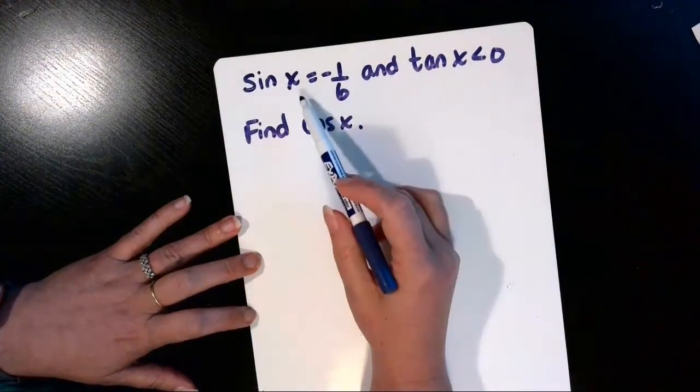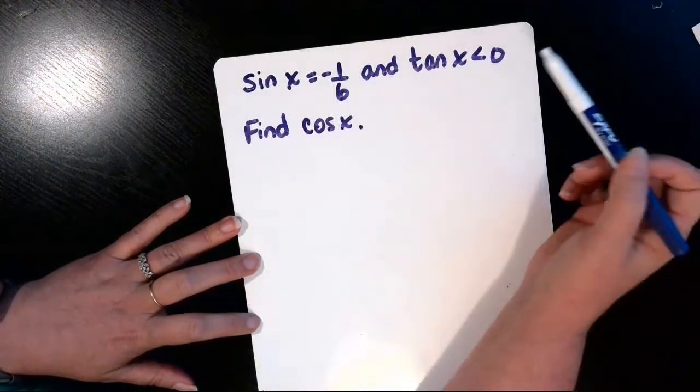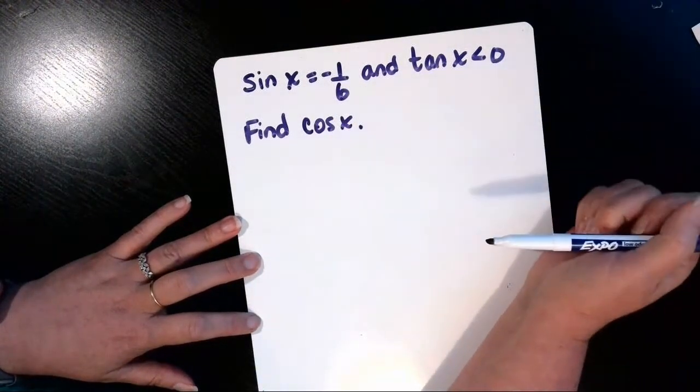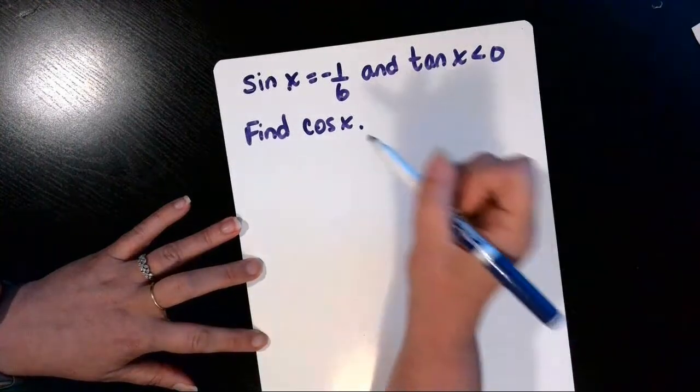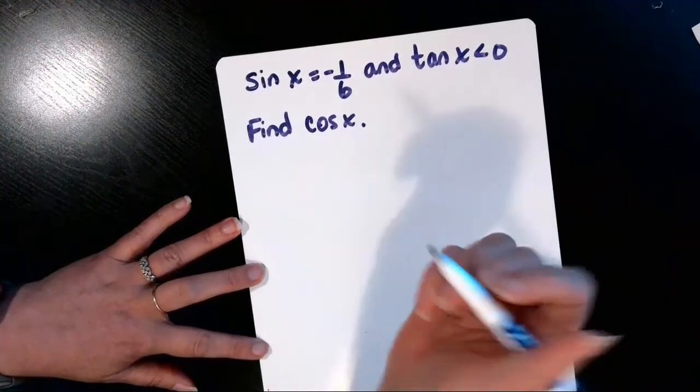Okay, we're told that the sine of x is negative one-sixth, the tangent of x is negative, and we want to find the cosine of x.